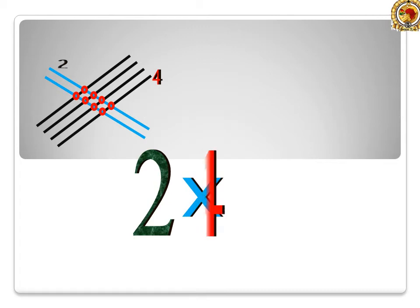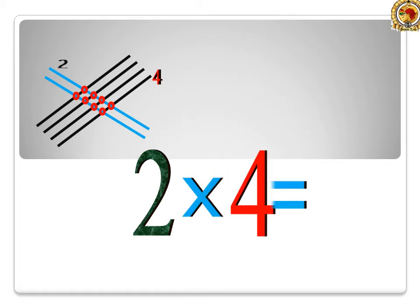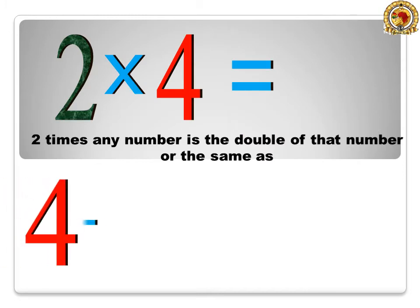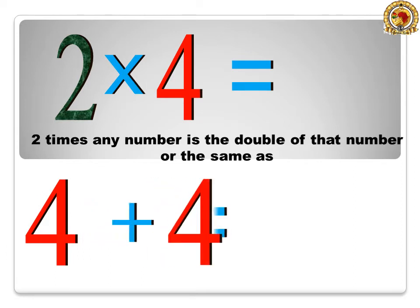2 times 4 is equal to 8. 2 times any number is the double of that number, or the same as 4 plus 4 is equal to 8.